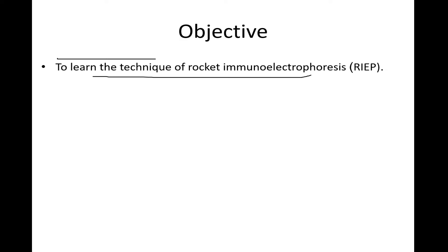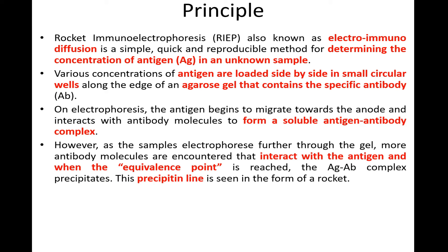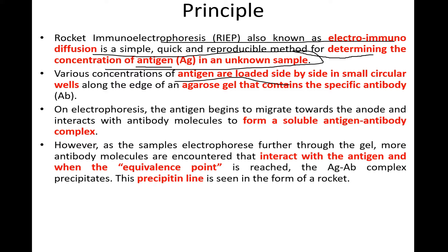Rocket immunoelectrophoresis, also known as electro-immunodiffusion or RIE, is a simple, quick, and reproducible method for determining the concentration of antigen in an unknown sample. Various concentrations of antigens are loaded side by side in circular wells along the edge of an agarose gel that contains a specific antibody.